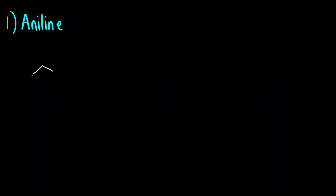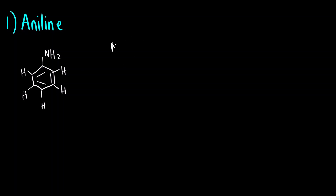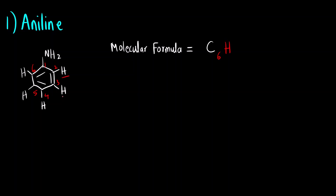Let us understand this with the help of some examples. First is aniline. Aniline is benzene with an NH2 group, and the remaining carbons of the benzene ring each have one hydrogen. The first step is to write down its molecular formula, which gives information about the total number of atoms. There are six carbons, seven hydrogens, and one nitrogen.